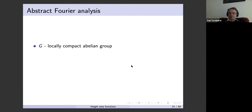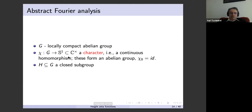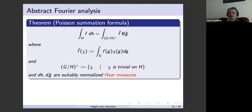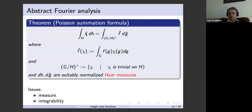Next chapter: Fourier analysis. We have a locally compact abelian group G, some character, a closed subgroup H, and the Poisson summation formula reads: integrating your function over H equals integrating the Fourier transform over the dual of H/G — all characters of G trivial on H. The Fourier transform uses the appropriate character. You have to suitably normalize the measures everywhere; integrability is of course a key condition.